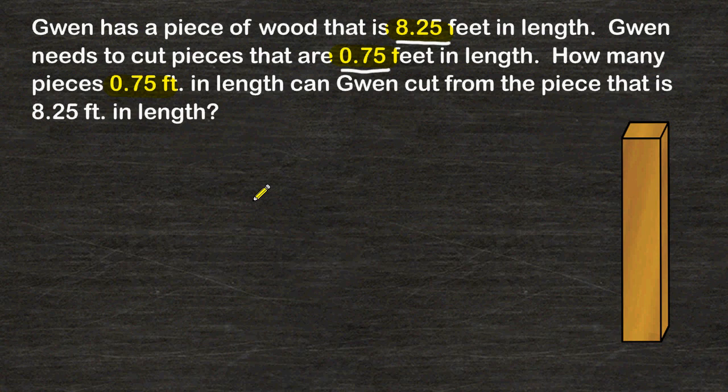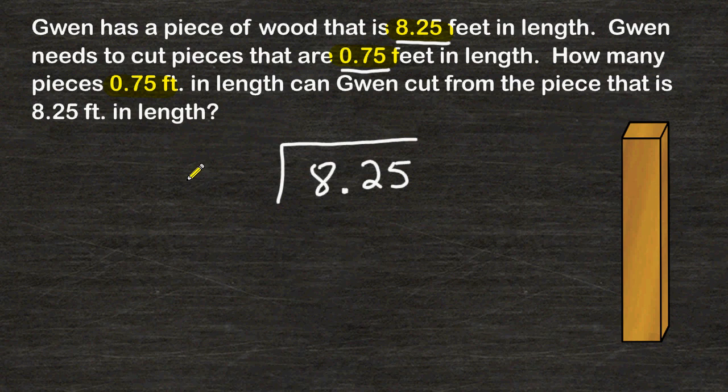So to figure out how many pieces of wood that are three quarters of a foot in length may fit inside a piece of wood that is eight and one quarter of a foot in length, we simply take 8.25 and we are going to divide that by 0.75.